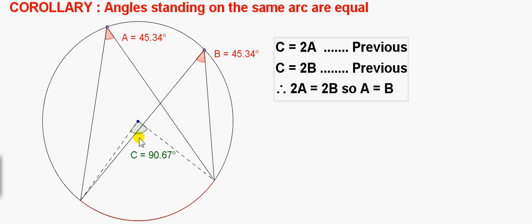Then we use the previous theorem, which says that the angle at the centre, which is C in this case, is twice the angle at the circle, where both angles stand on the same arc. So C equals 2A.